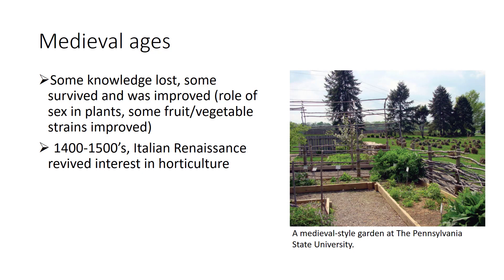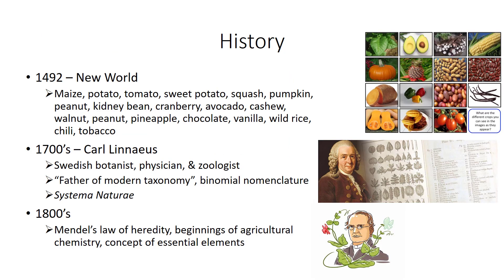The Renaissance has been described as the rebirth of the arts and sciences, immediately following the Middle Ages. The New World had numerous horticultural contributions, including many new vegetables and fruits, with explorers introducing plants from South America, Africa, and the Orient. In the 1700s, Linnaeus developed a simple yet elegant system for plant classification called binomial nomenclature, which is still used today.